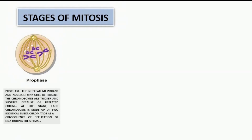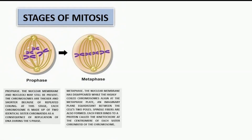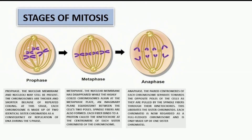Each chromosome is made up of two identical sister chromatids as a consequence of replication of DNA during the synthesis phase. The second stage is metaphase. The nuclear membrane has disappeared while the highly coiled chromosomes align at the metaphase plate, an imaginary plane equidistant between the cell's two poles. Spindle fibers are also formed; each fiber binds to a protein called kinetochore at the centromere of each sister chromatid of the chromosome.